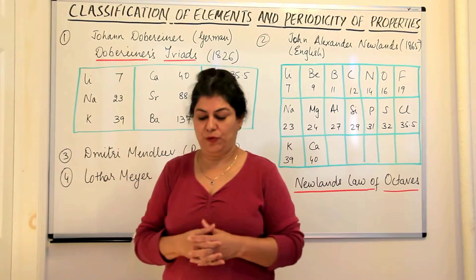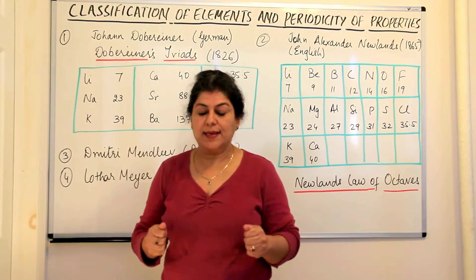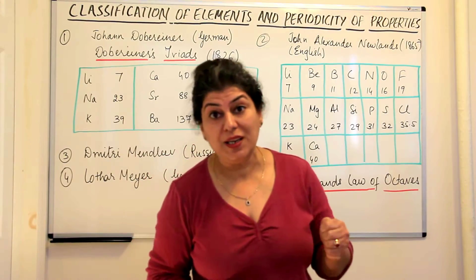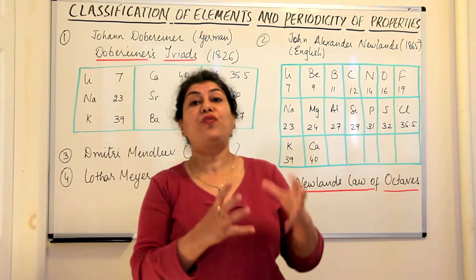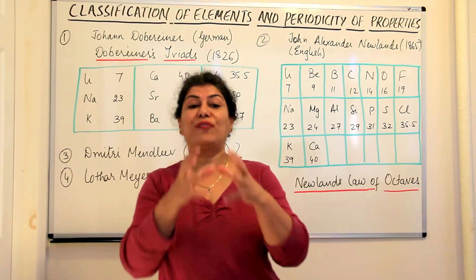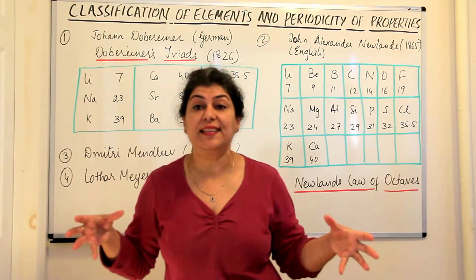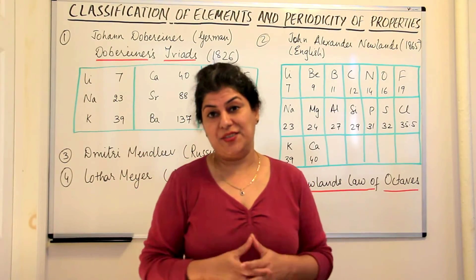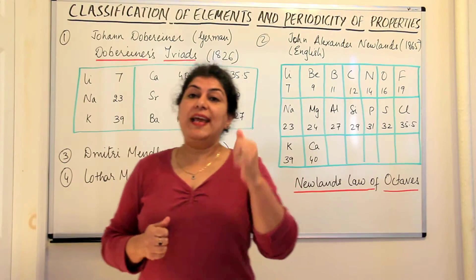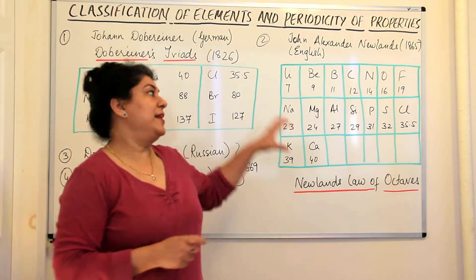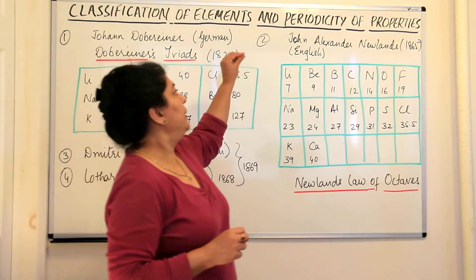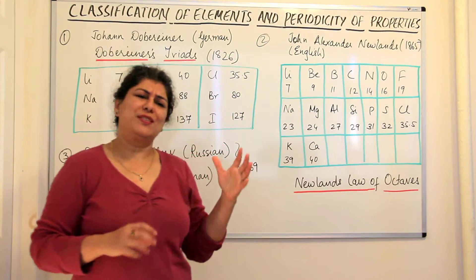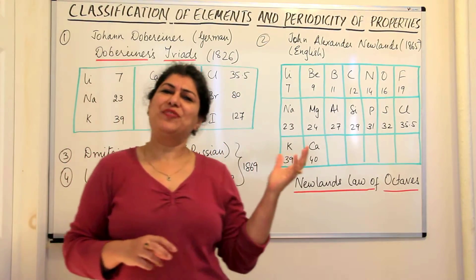It wasn't very helpful, and it meant that scientists had to continue working towards this and try to find ways of categorizing these elements so that our study could be easier. So the next scientist — chemist — was John Alexander Newlands.